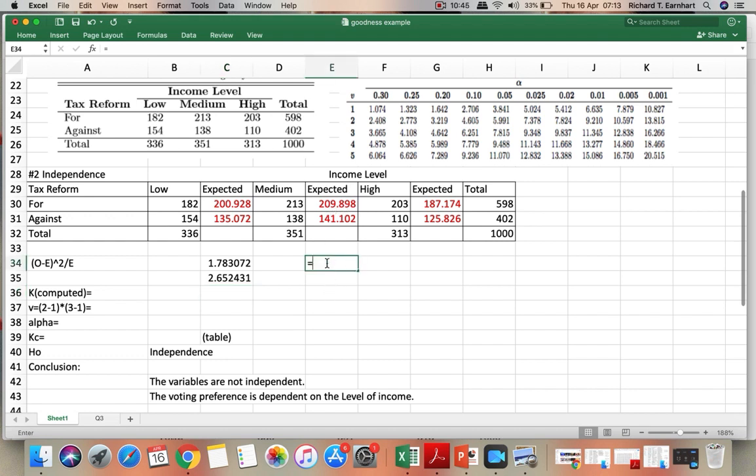Here we have observed minus expected, divide by the expected. Copy for the next row. And then for the high income - observed minus expected quantity squared divide by the expected. And then copy for the next row.